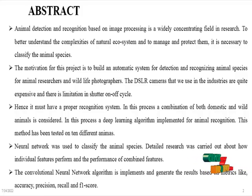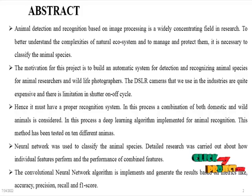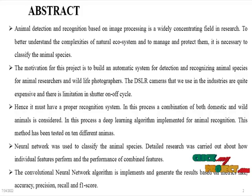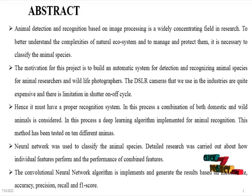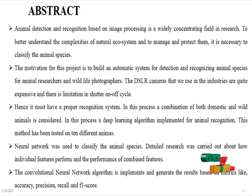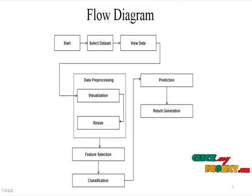A deep learning algorithm is implemented for animal recognition. This method has been tested on 10 different animals, and a neural network was used to classify the animal species. Detailed research was carried out on how individual features perform and the performance of combined features. The convolutional neural network algorithm generates results based on metrics like accuracy, precision, recall, and F1 score.